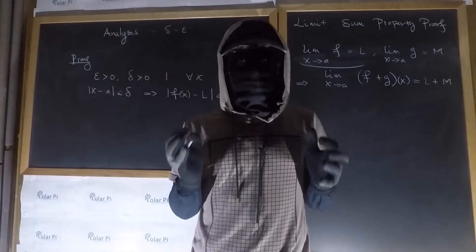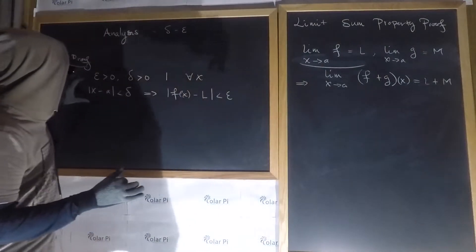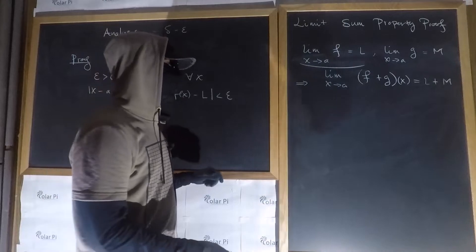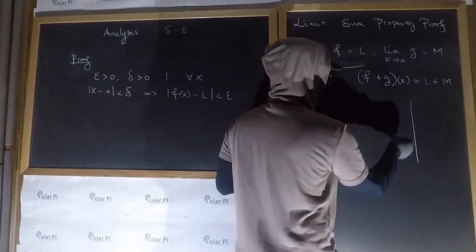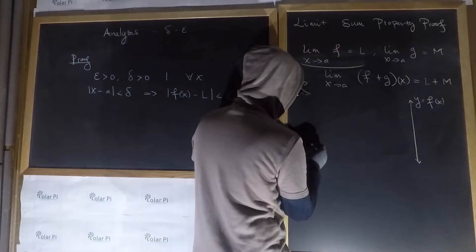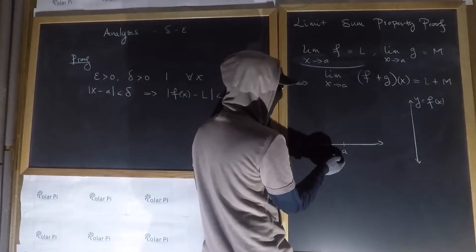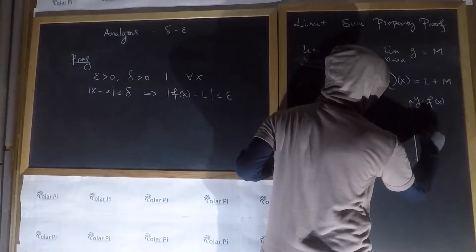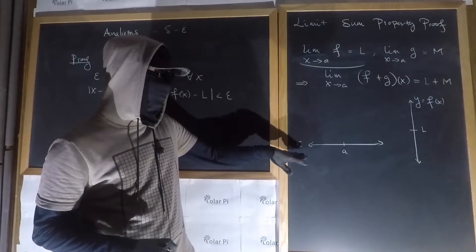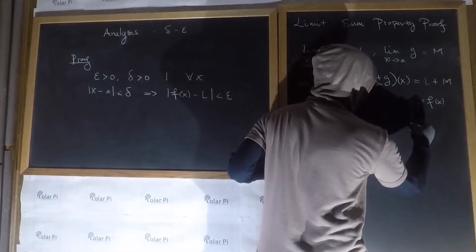In the video where I introduced the delta-epsilon limit definition, I wanted to make one thing abundantly clear: the delta-epsilon limit definition is an epsilon challenge. What I mean is this — you give me an epsilon as small as you'd like. You've claimed that as x goes to a, f(x) goes to L. Is it really true? If that's true, then I give you an epsilon as small as I want.